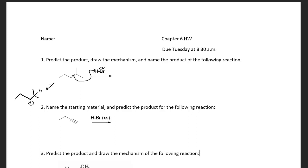Putting the hydrogen there gives us a secondary carbocation, which is what I don't want. What I do want to do is put that hydrogen here on this carbon, so my plus charge is now on this carbon — this is my tertiary carbocation intermediate.